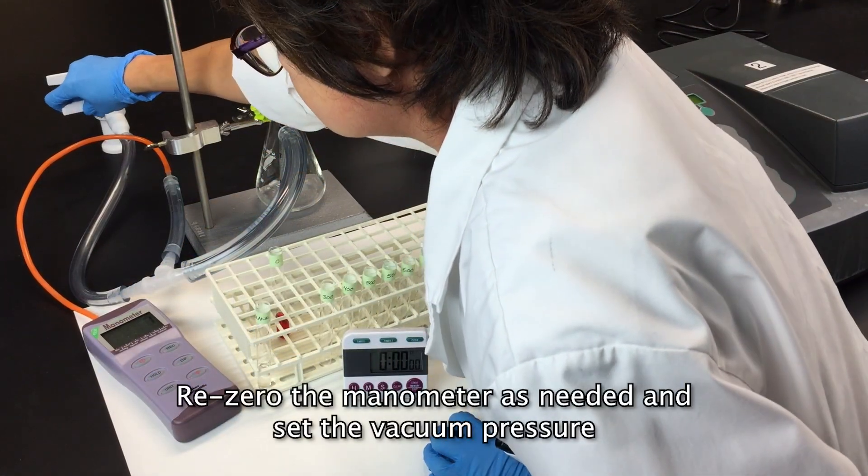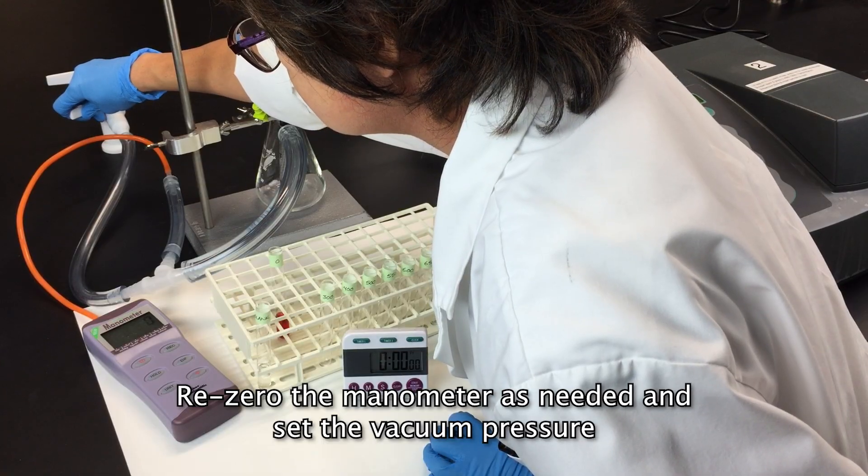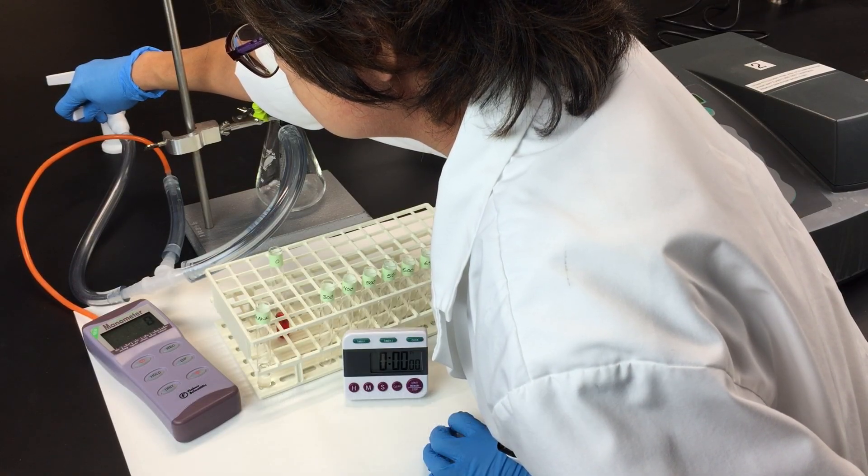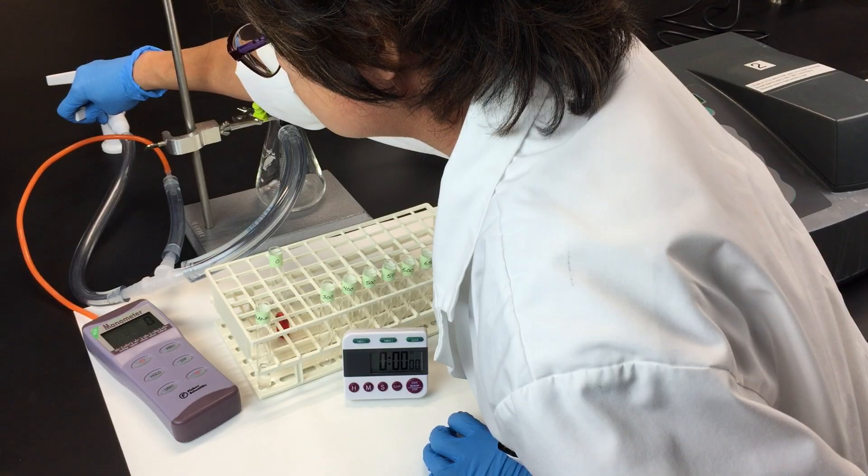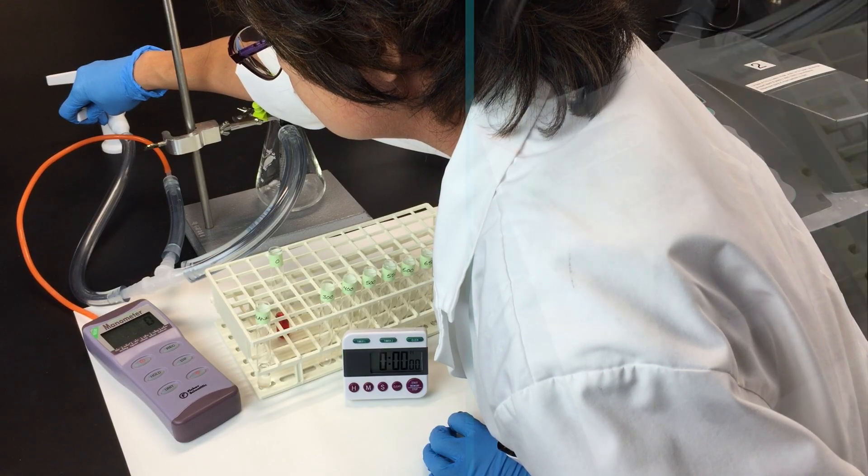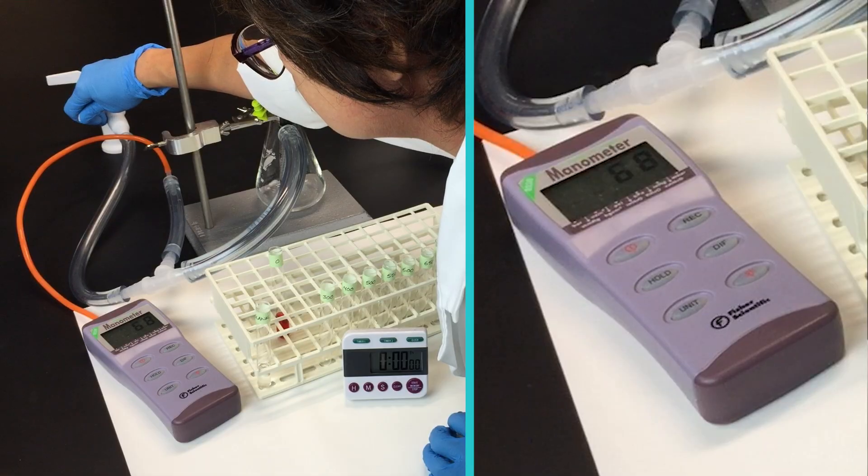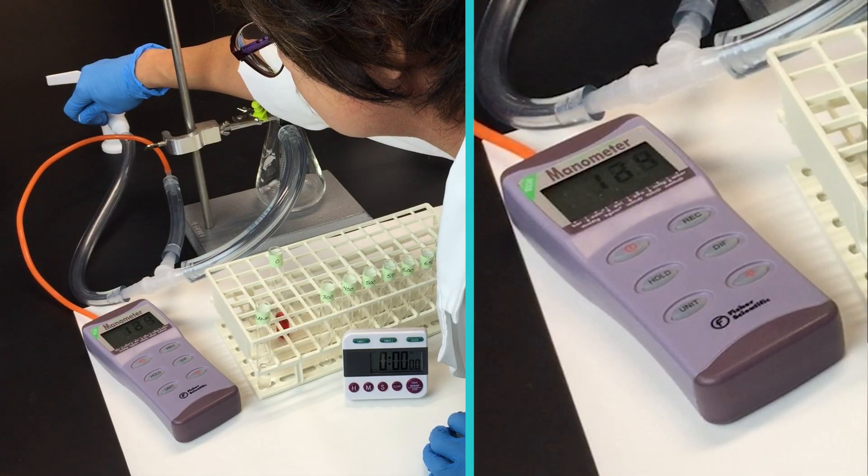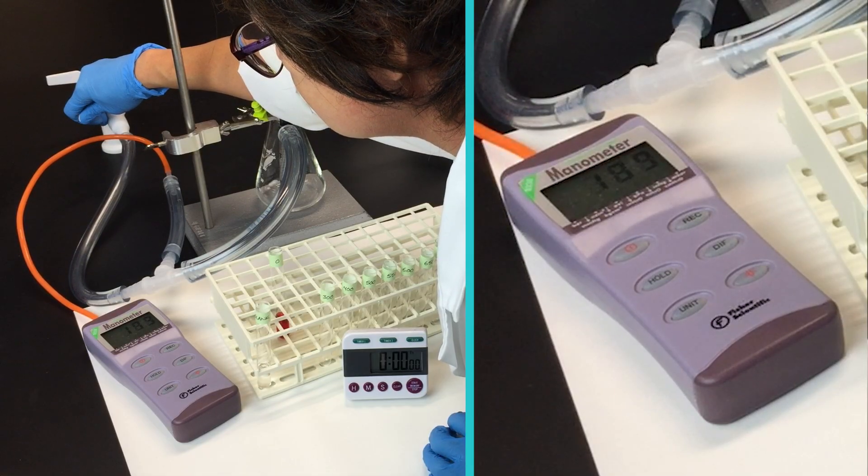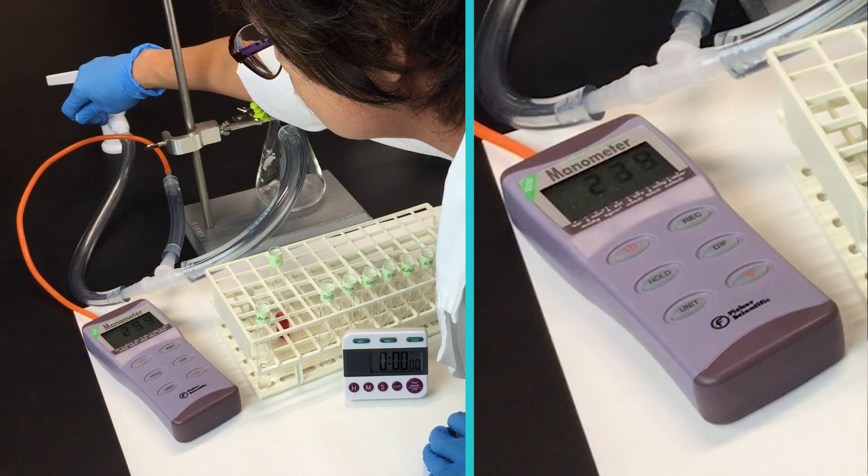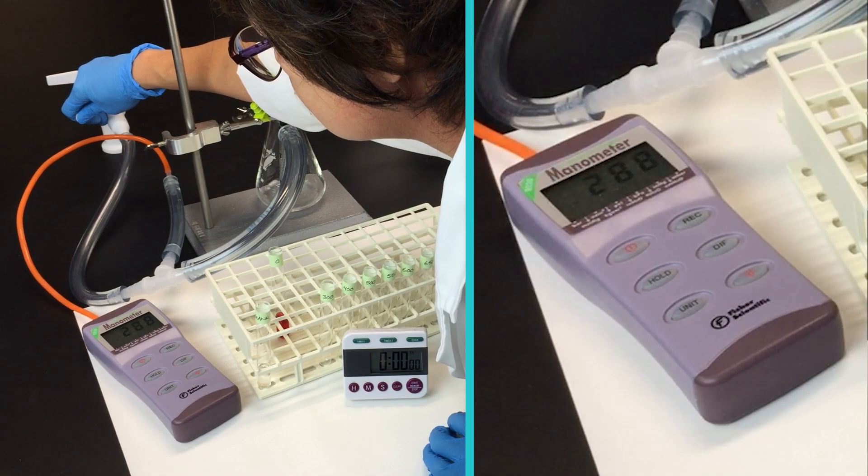Now slowly open the vacuum and increase it to 300 millimeters of mercury. You want to do this slowly and carefully because it's very easy to overshoot your target vacuum pressure. Once you reach your target vacuum pressure, nudge the valve back slightly so that it stops increasing.